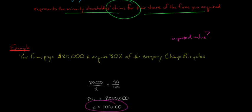So this X is $100,000. What that means in layman's terms is that you paid $80,000 for 80% of this company. That's giving an imputed value to the entire firm of Chimp Bicycles of $100,000.